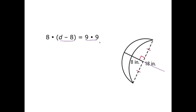So that's the setup for our equation, and now we'll be able to solve for the diameter by multiplying out. Remember when you have 8 times D minus 8, you're going to have to use the distributive property. So I have 8D minus 64 equaling the 81. I'll add 64 to both sides and then divide by 8 to get my final answer.